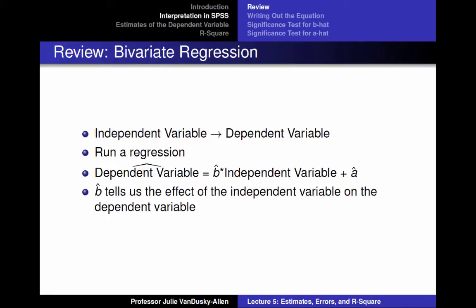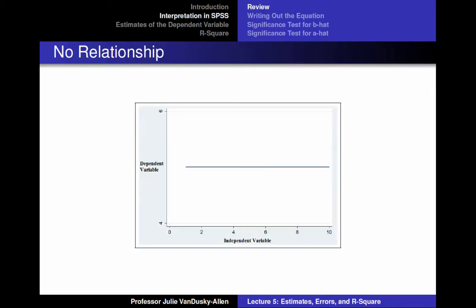Before I move on to new material, I would like to review some material from the previous lecture. Recall that we begin the scientific process by identifying a dependent variable and an independent variable that we think has an effect on the dependent variable. We run a regression to determine whether the independent variable has a statistical impact on the dependent variable. The regression analysis produces an equation: dependent variable hat equals b-hat times the independent variable plus a-hat. B-hat tells us the effect that the independent variable has on the dependent variable. If the independent variable has no discernible effect on the dependent variable, then b-hat would equal zero — as the independent variable increases, the dependent variable stays the same.